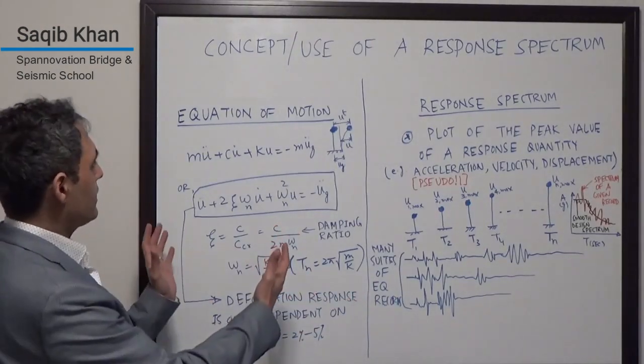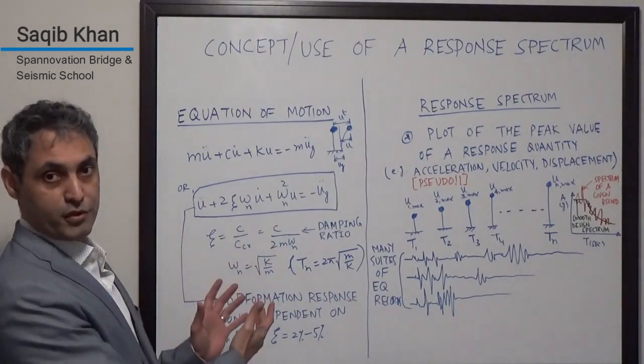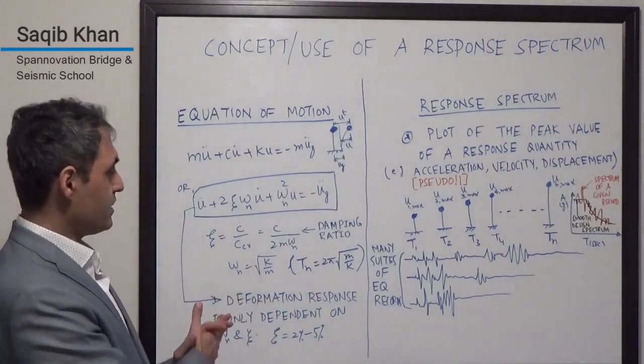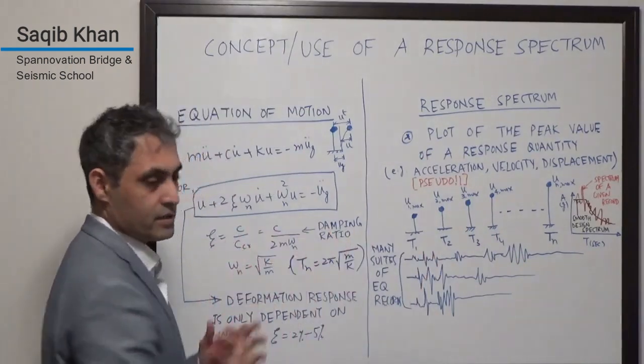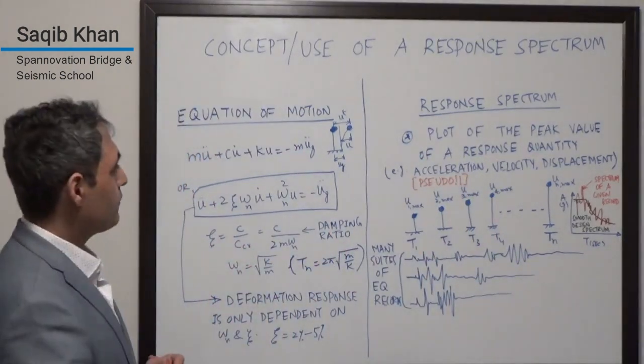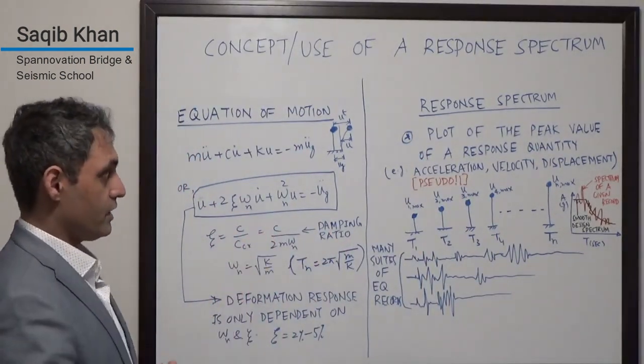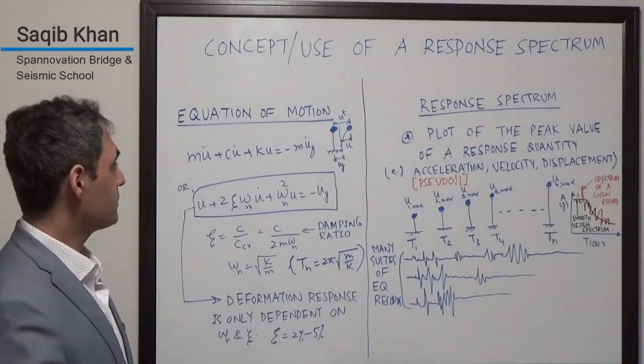I want to start on this side and have a look at the equation of motion of a single degree of freedom system, see what we can learn from it, and then jump over to this side and see how things tie together in terms of the use and concept of a response spectrum.